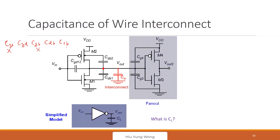So we have 2×C_gd and 2×C_db for the first stage, and similarly for the driving stage we have gate capacitances lumped together. The total loading capacitance is not just the wire capacitance C_w — it also includes C_db, 2×C_db, C_gd1,2, and the loading gate capacitances C_g3 and C_g4. There are many capacitances to account for, which you will calculate in the assignment.